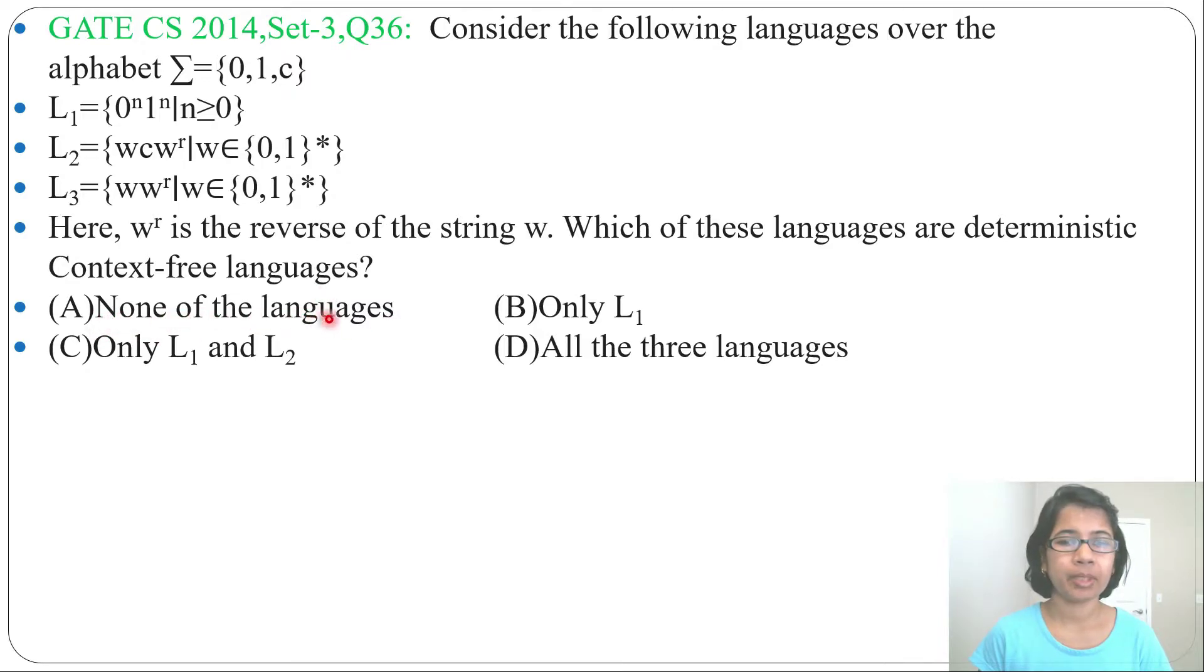Option A: none of the languages. Option B: only L1. Option C: only L1 and L2. Option D: all of the three languages. So let's analyze one by one language.